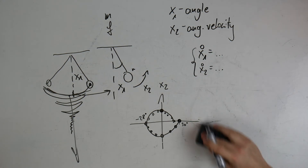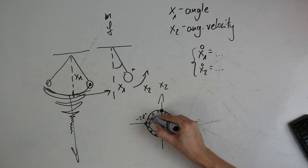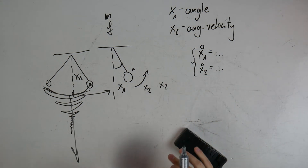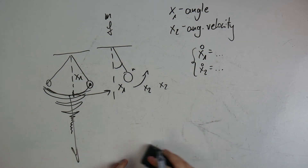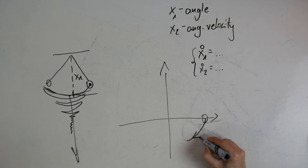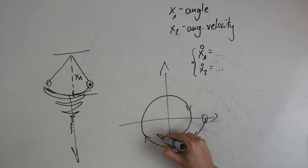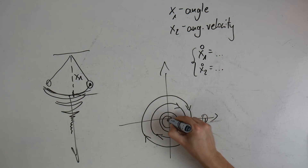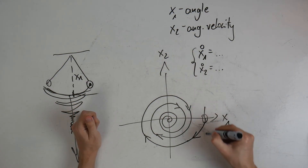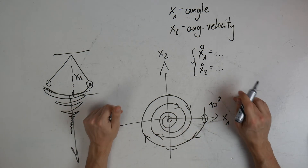If I repeat this movement, each time getting closer to zero, I will be tracing closer and closer loops. After some time I may reach zero or a point as close to zero as possible. Depending on where I start, I get a spiral plot, and I need to add an arrow because this movement has a direction. So this is my phase plane plot.